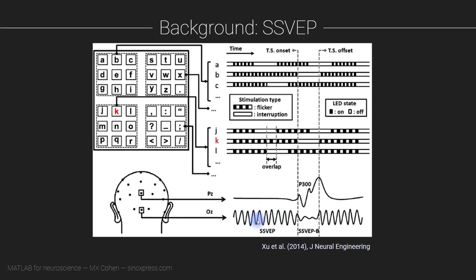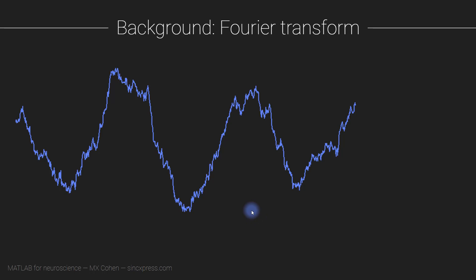So how do we quantify a rhythmic or oscillatory response in the data? We're going to do that through the Fourier transform. The Fourier transform is one of the most important operations in signal processing and information communications.